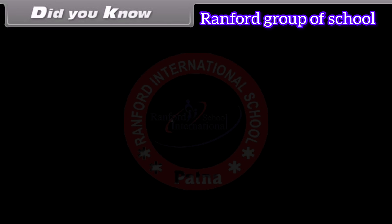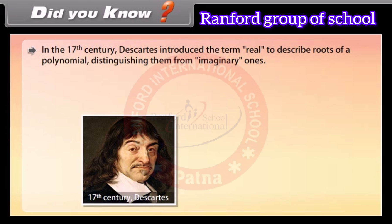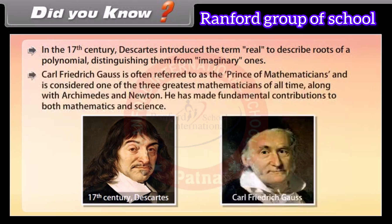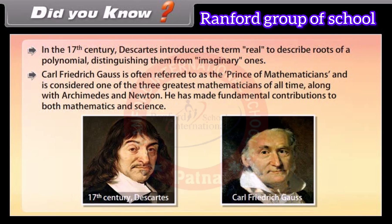Did you know? In the 17th century, Descartes introduced the term 'real' to describe roots of polynomials, distinguishing them from imaginary ones. Carl Frederick Gauss is often referred to as the Prince of Mathematicians and is considered one of the three greatest mathematicians of all time, along with Archimedes and Newton. He made fundamental contributions to both mathematics and science.